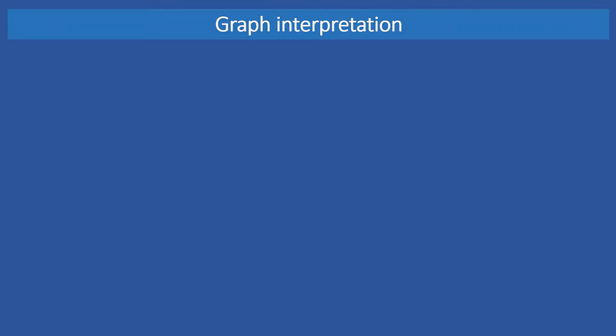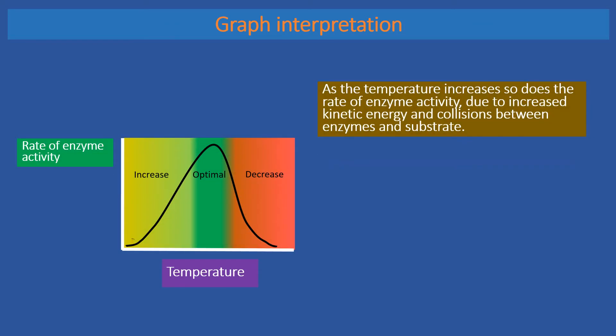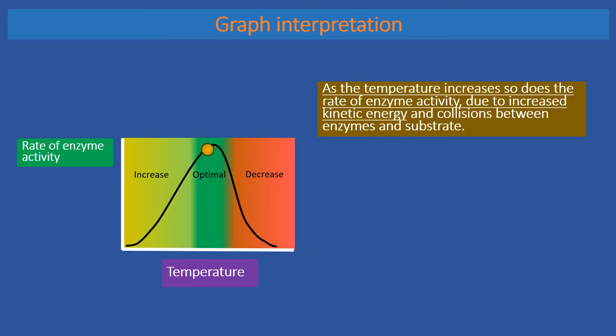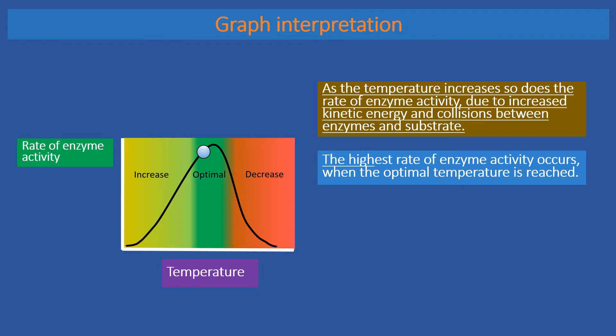Let's see how this is shown in a graph. Let's see how to interpret a graph showing the effect of temperature on enzyme activity. As the temperature increases so does the rate of enzyme activity due to increased kinetic energy and collisions between enzymes and substrate. The highest rate of enzyme activity occurs when the optimal temperature is reached.